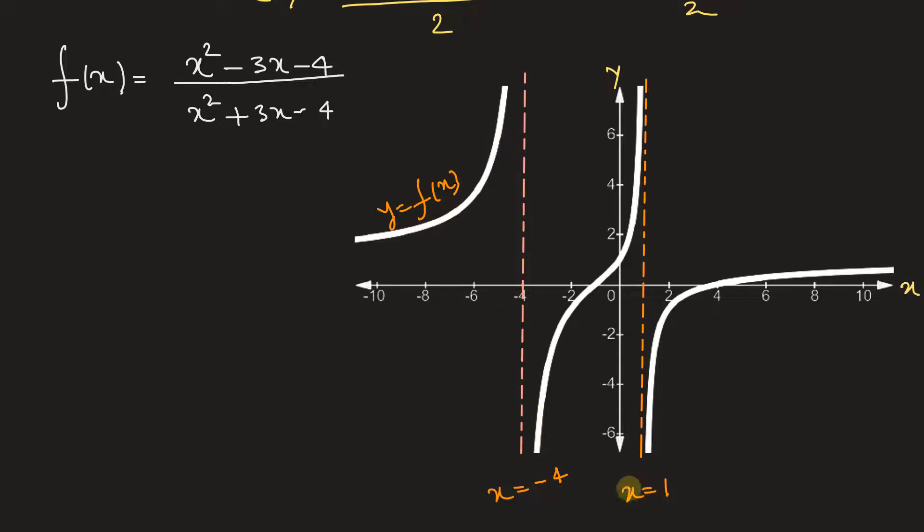Or we can say that at x is equal to minus 4 and at x is equal to 1, there is an asymptote in the graph.